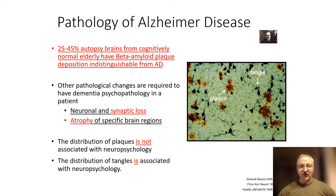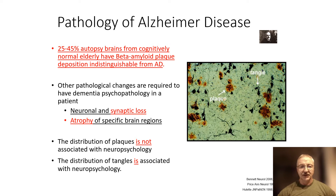If you take people at death, about 40-45% of people have pathology in their brain that is indistinguishable from Alzheimer's disease. These are the plaques, which are this brown color, and these intracellular tangles we can see here on this plate.